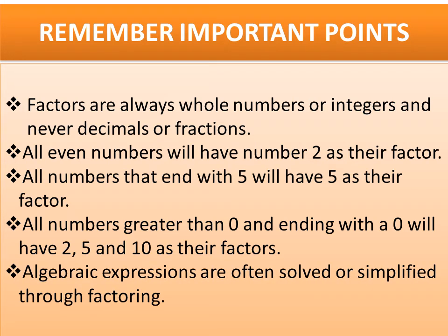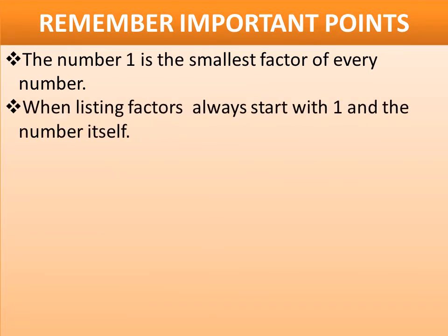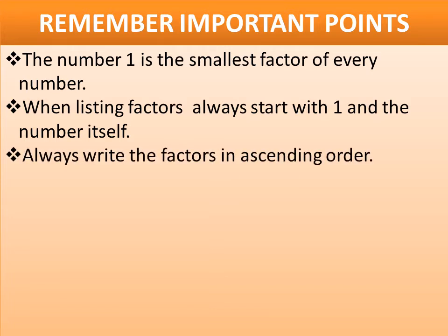Point 5: Algebraic expressions are often solved or simplified through factoring. Point 6: The number 1 is the smallest factor of every number. Point 7: When listing factors, always start with 1 and the number itself. Point 8: Always write the factors in ascending order.